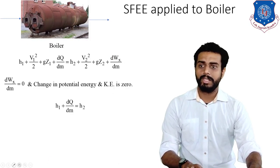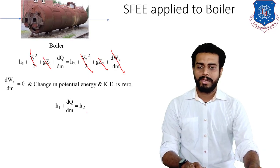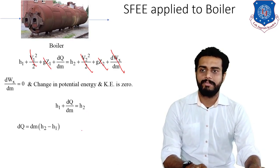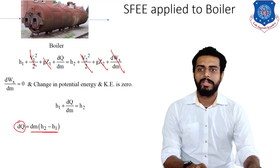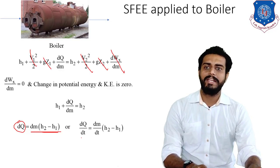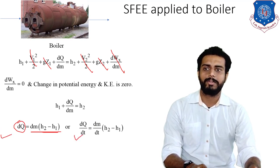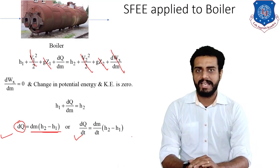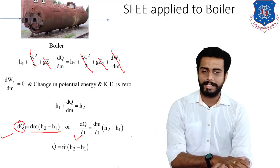After neglecting V1²/2, gZ1, V2²/2, gZ2, and dWx/dm, we are left with H1 + dQ/dm = H2. Solving for heat transfer: dQ = dm(H2 − H1), which gives the heat transferred during conversion of water into steam. In rate form: dQ/dt = (dm/dt)(H2 − H1), or Q̇ = ṁ(H2 − H1).